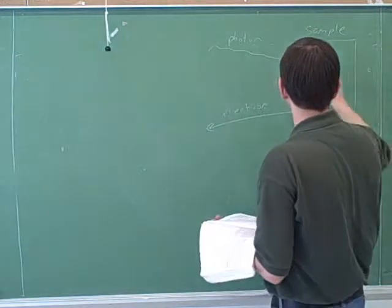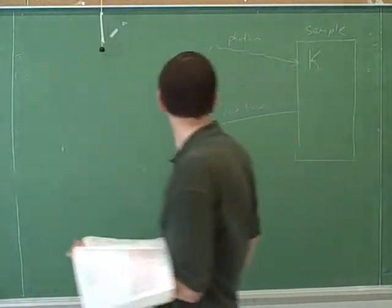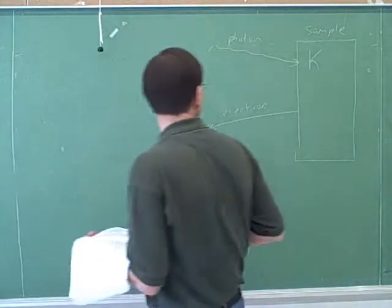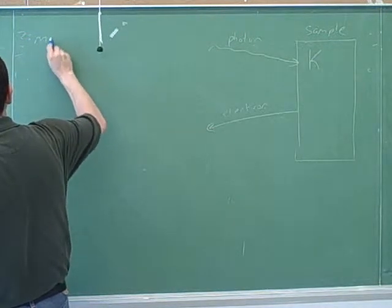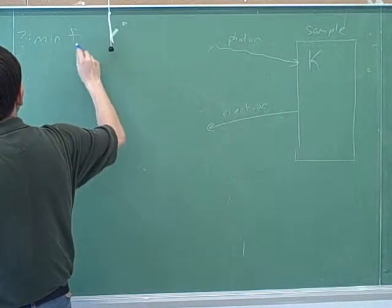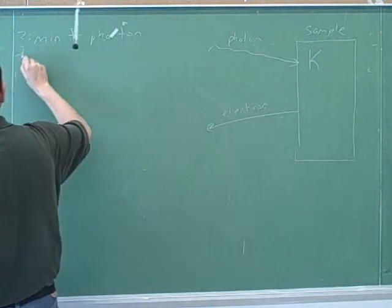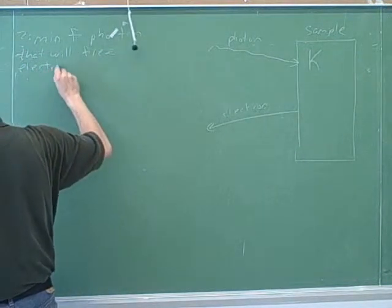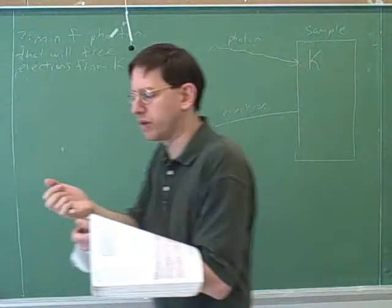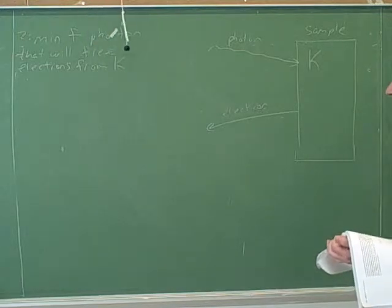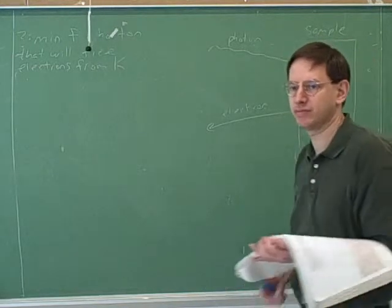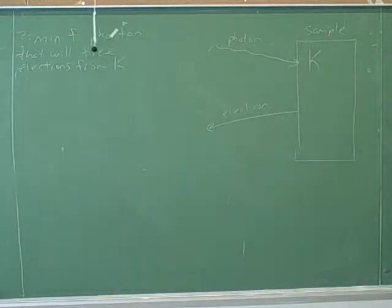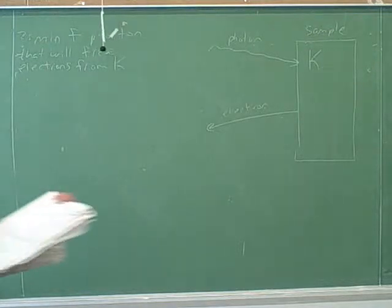Let's say that we have a sample that's made out of potassium. Alright, so let's do a sample problem. Let's say we had to figure out the minimum frequency photon that would free electrons from potassium. Yeah, what is that work function? It is 2.3 electron volts.